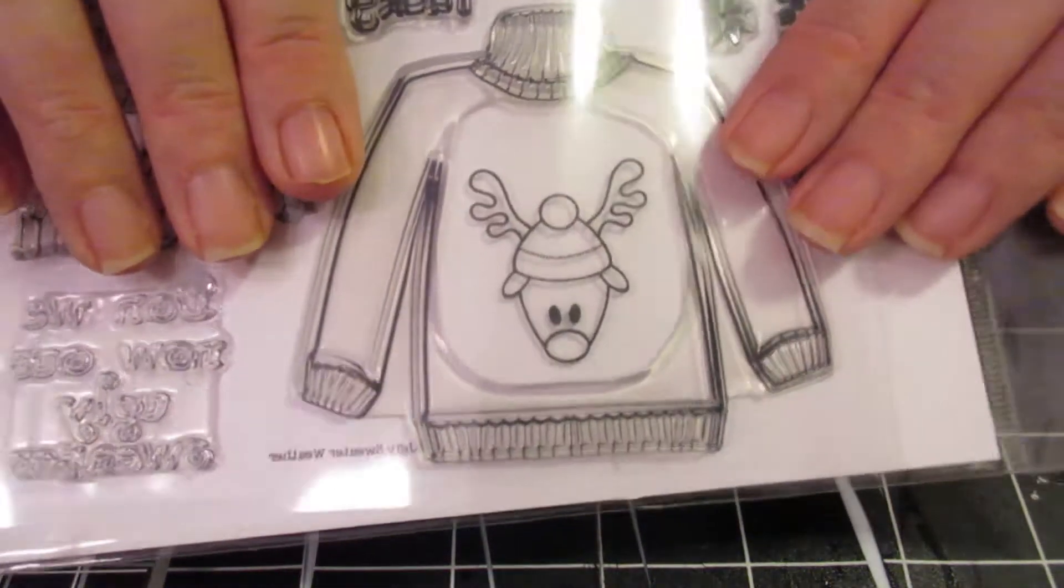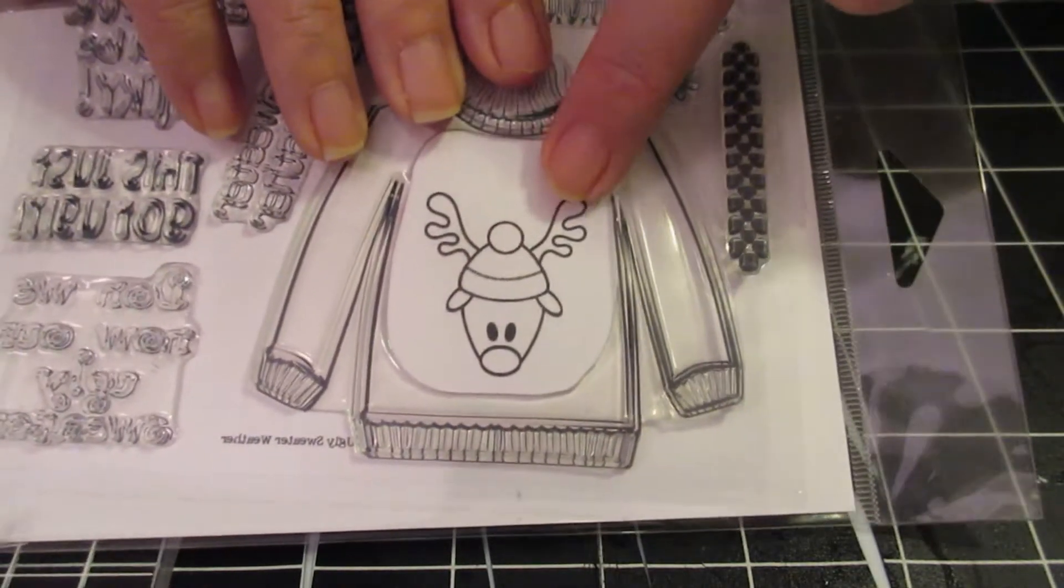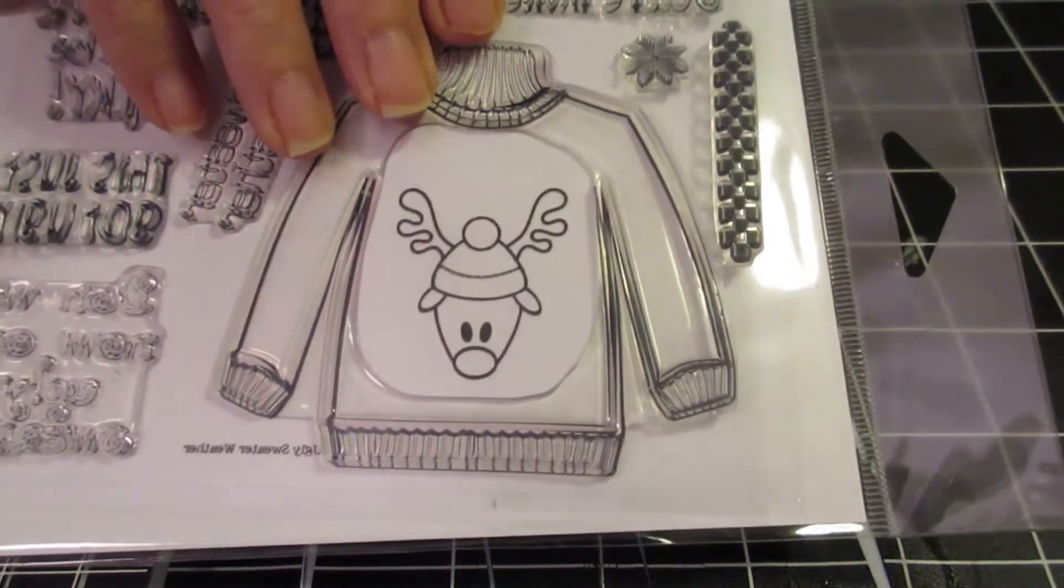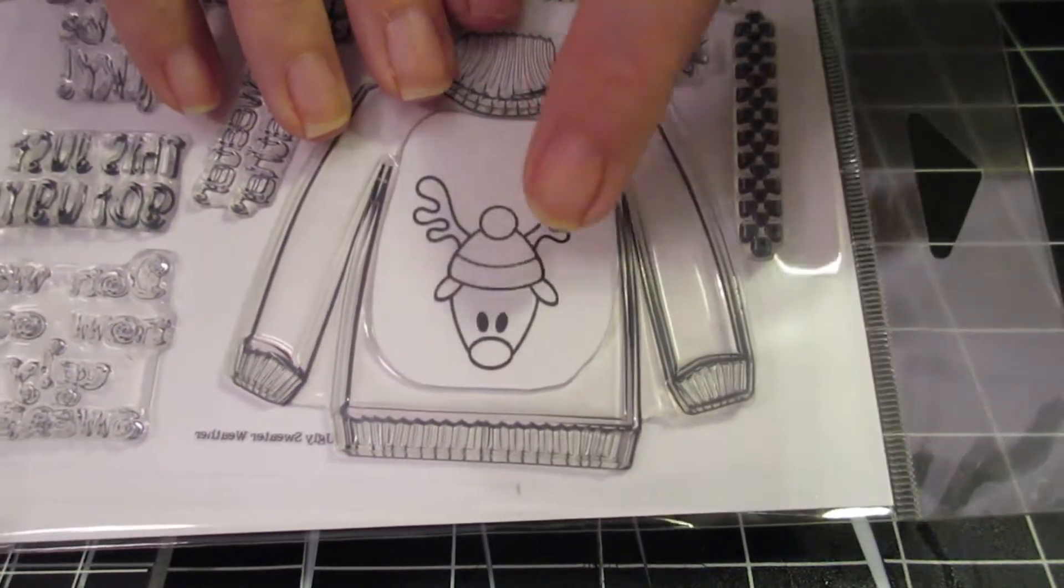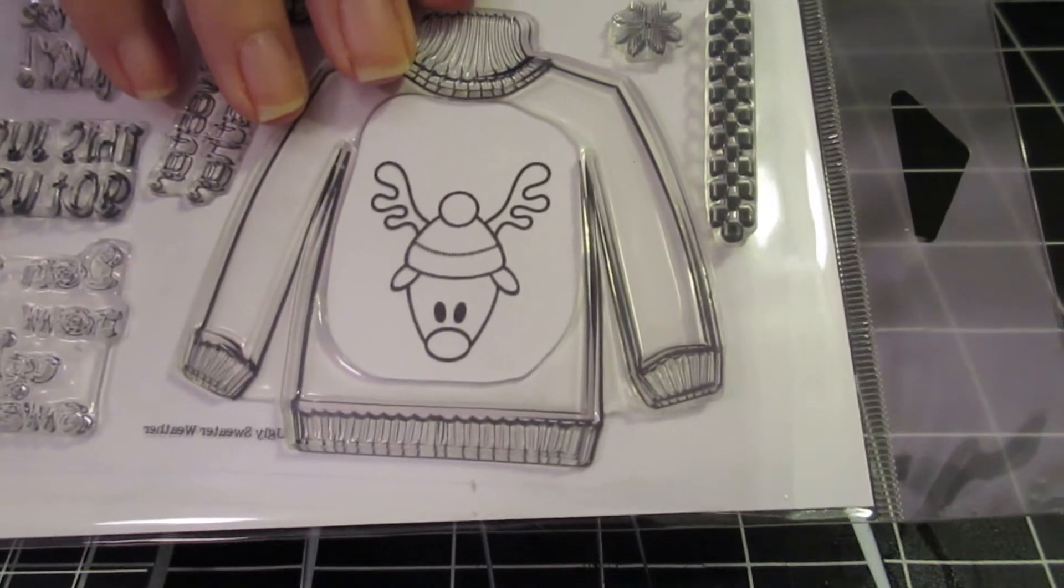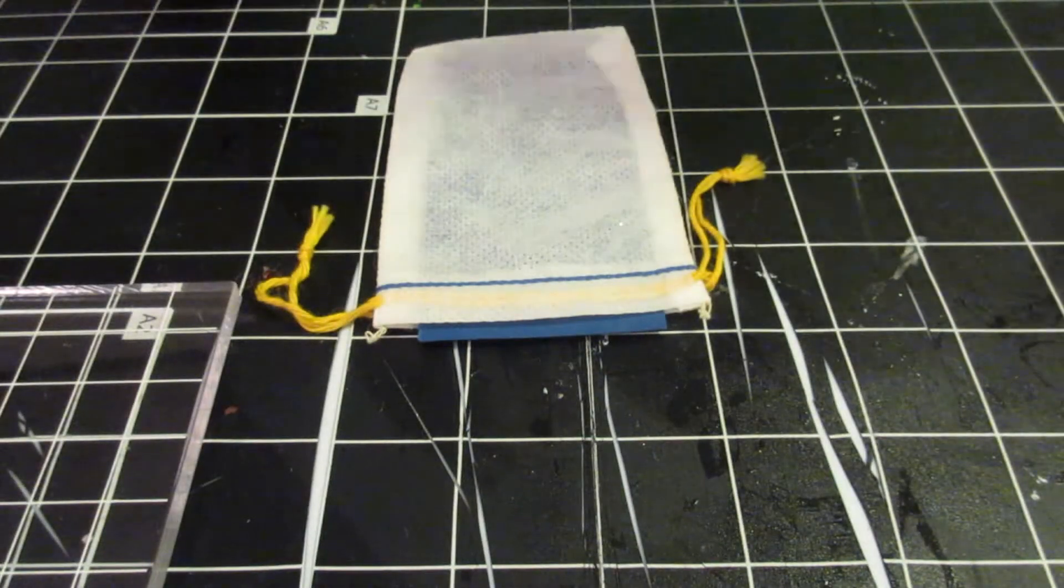Now, if you remember the ugly sweater set, the stamp on the inside of the ugly sweater, which I don't know why we call it an ugly sweater, it's cute, is a little reindeer. So I thought, wouldn't that be cute to put the reindeer on the sack? Now, I have not tried this. So this is an experiment.